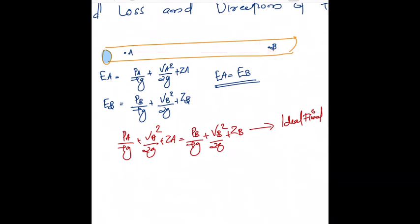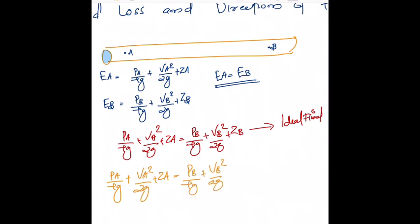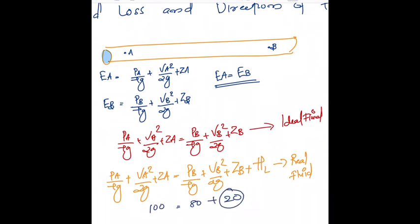While flowing through the pipe, some energy will be lost due to viscosity and friction as the fluid travels from A to B. So for a real fluid, the equation will be: p_A/ρg + v_A²/2g + z_A = p_B/ρg + v_B²/2g + z_B + head loss. This is like saying 100 equals 80 plus 20 — at A, 100 units may be present, at B only 80 units, and 20 units are lost during the movement from A to B.